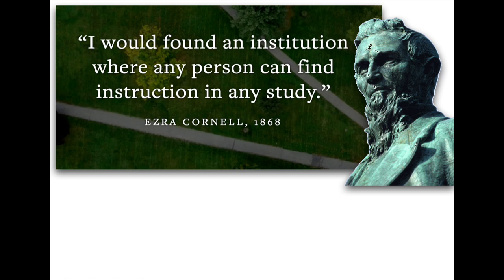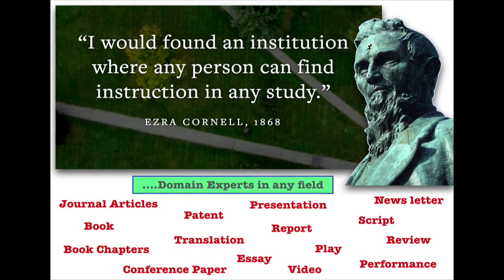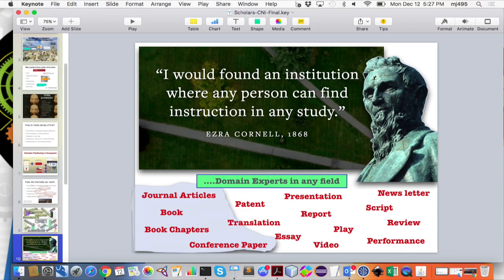As Ezra Cornell said 150 years ago: I would found an institution where any person can find instruction in any study. And that's what Cornell is right now. We can find domain experts in many fields, and that means their scholarly contributions also vary significantly — ranging from articles, books, conference papers, to newsletters, scripts, reviews, performances, and so on. Scholars at Cornell's supreme goal is to record most of these scholarly contributions, but for the start we focus on the easy ones: publications.